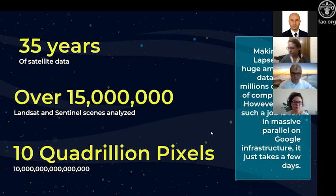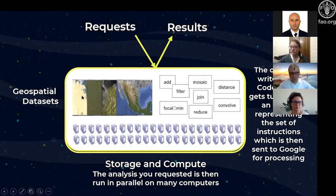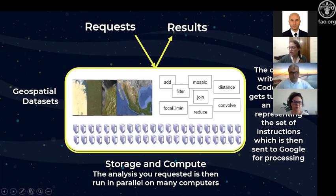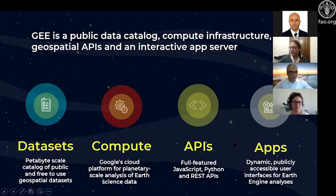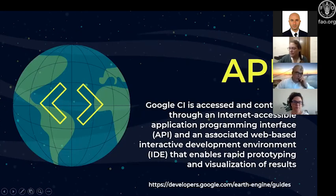To summarize: you send a request from your computer, and in Google Earth Engine you have all the geospatial datasets, the storage, and the computation infrastructure of Google. Google does all the heavy work. There is a script API — an application programming interface — which you implement in the code editor of Google Earth Engine. You can also program with Python.